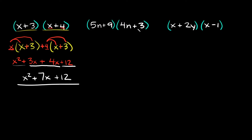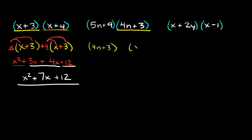Now let's go to this next example: (5n + 9) times (4n + 3). With this one, I'm going to show you that you can do it the other way as well. Going back to the first example, we took the first parentheses and wrote it twice. In this one, we're going to take the second parentheses and write it twice — (4n + 3) and (4n + 3). I'm doing this to show you it doesn't matter which one you choose to write twice; you'll still get the right answer either way, as long as you follow the right steps.